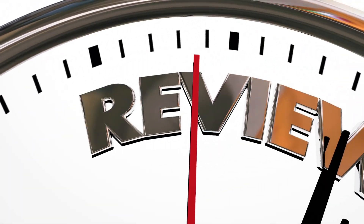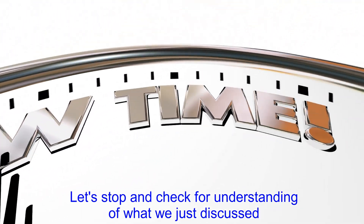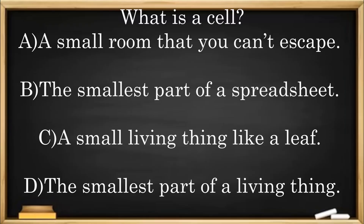Before we move on, let's stop and check for understanding of what we just discussed. What is a cell? A: A small room that you can't escape. B: The smallest part of a spreadsheet. C: A small living thing like a leaf. D: The smallest part of a living thing. The answer is D.